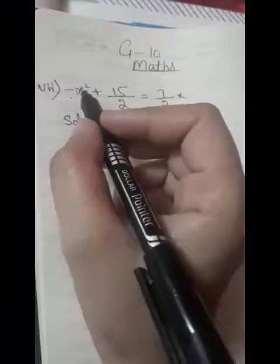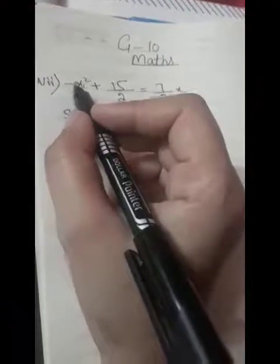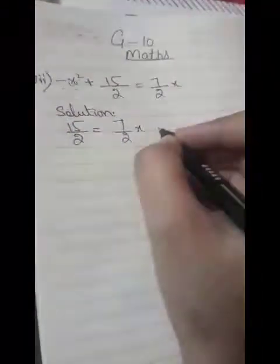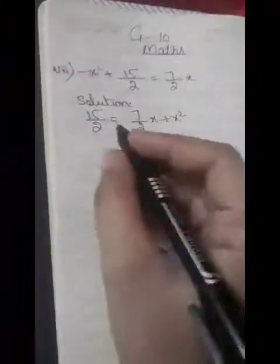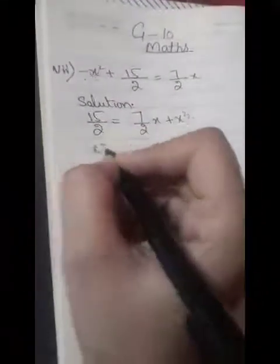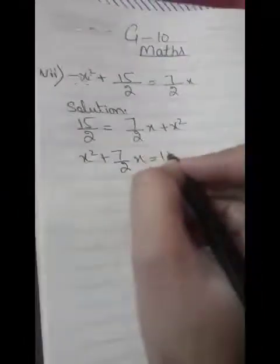Moving terms around, we can change the minus to plus. This gives us the equation: x² plus 7/2x equals 15/2.